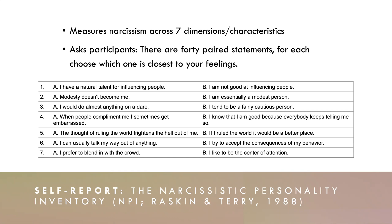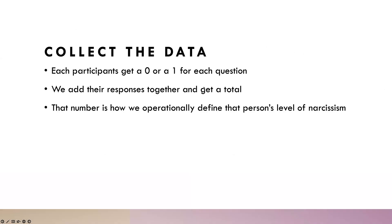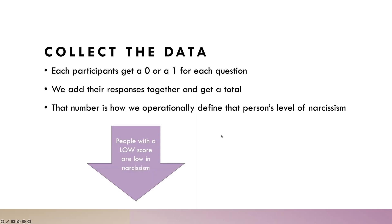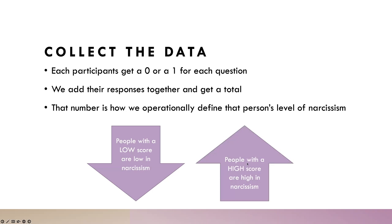It might be the score on the NPI, it could be their answer to a yes/no question. If it is something like race and ethnicity, it could be their self-reported race and ethnicity. The key is that you are specifically saying, this is how this is measured. You use this to create a total score: participants get a zero or a one for each question. The NPI tells you which response gets a one and which gets a zero. You add their responses together and get a total — if a person has a low score, they're low in narcissism; if they have a high score, they're high in narcissism.